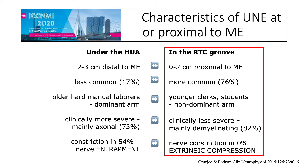The characteristics of this proximal ulnar neuropathy at the elbow: the lesion lies at or 2 cm proximal to the medial epicondyle. It is more common, occurs in non-physical workers in the non-dominant arm, and is clinically less severe — mainly demyelinating. You will never find nerve constriction in this type, so we think the lesion is caused by external compression.